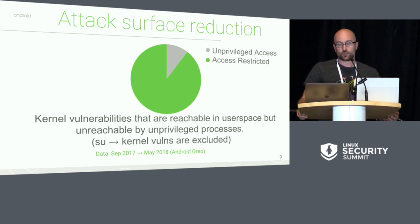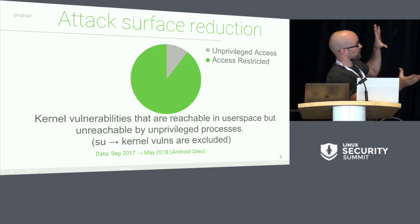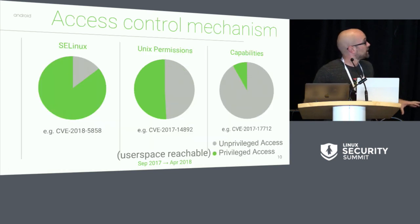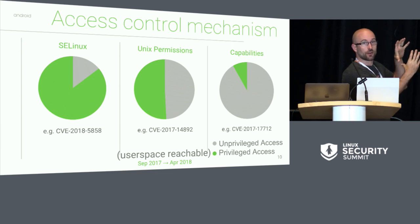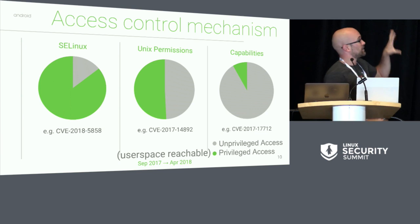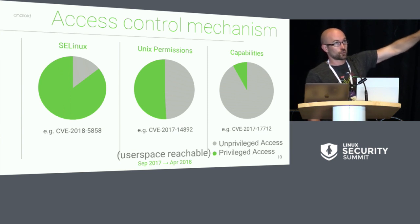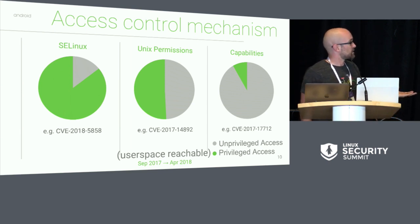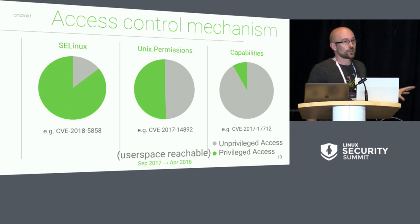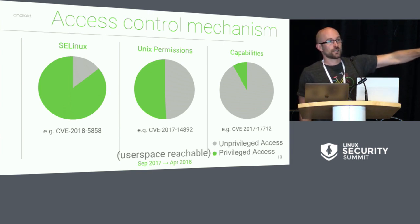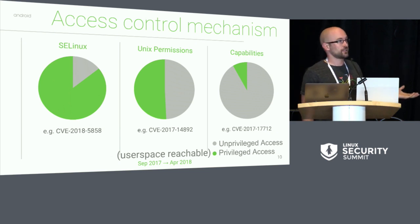Looking at the different attack surface reduction mechanisms that we use, I'm going to break this graph into the components that add up to it. If you imagine that 90% of our vulnerabilities are mitigated through access control mechanisms, this graph shows you the different access control mechanisms and what percentage of vulnerabilities they mitigate against. Obviously SE Linux is the largest one, but the only way this makes sense is that there's overlap. For kernel vulnerabilities specifically, everything that was mitigated through Unix permissions was also mitigated by SE Linux.